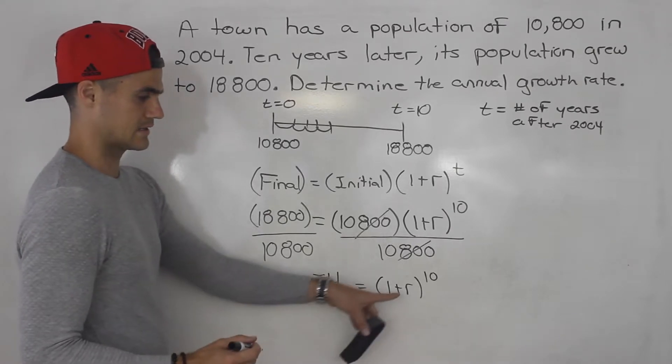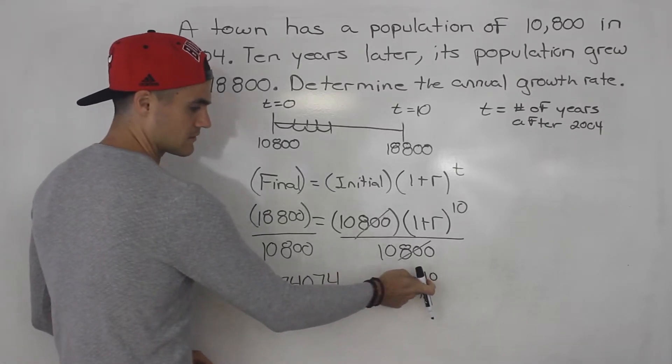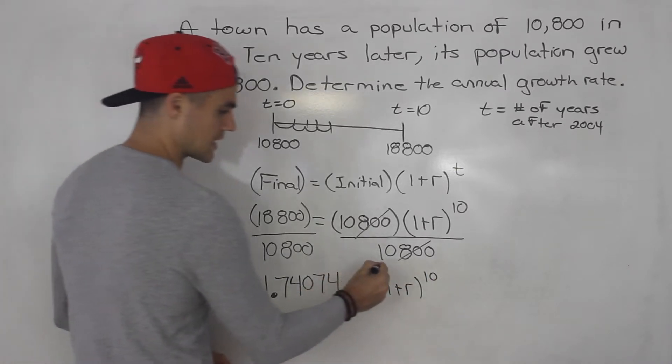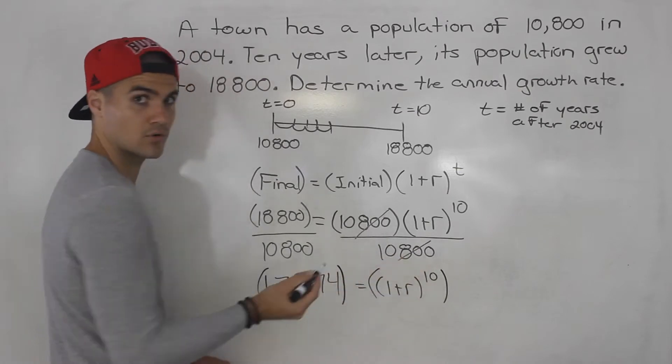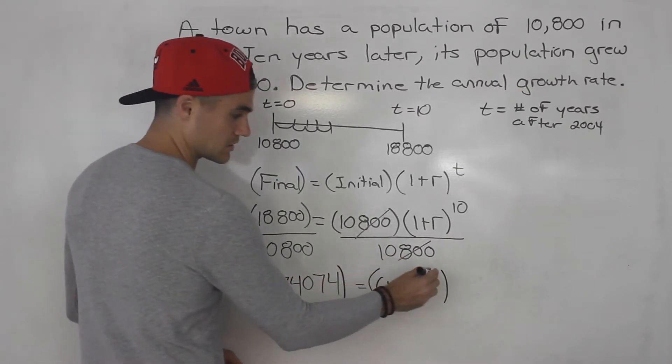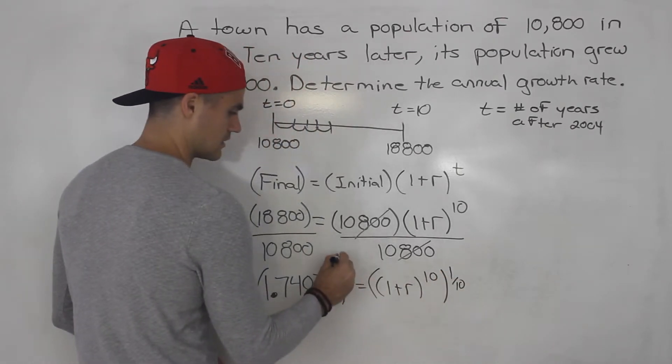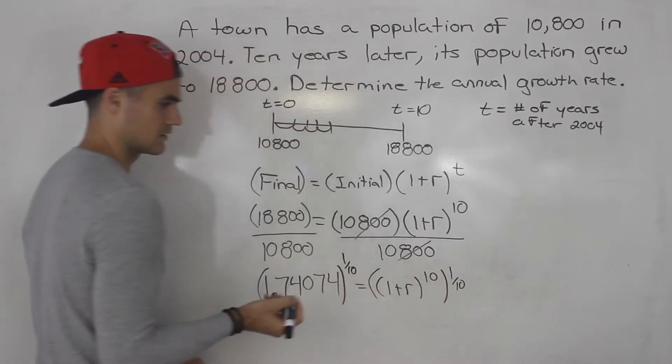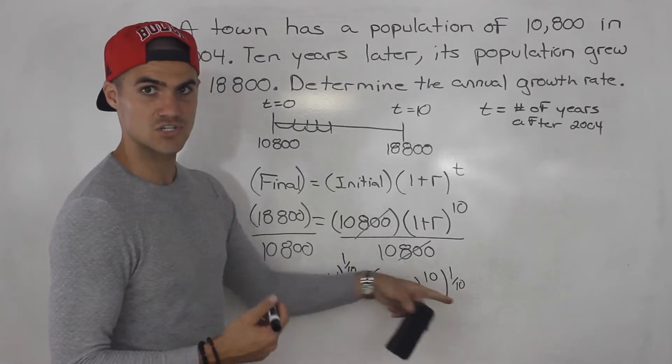And now how do we isolate for this r here? We got to get rid of this exponent 10. The way we do that is we take both sides to the power of the reciprocal of that exponent. So notice this is 10 over 1. The reciprocal of that is 1 over 10. So notice that 10 times 1 over 10 is just 1. So (1 plus r) to the power of 1 is just 1 plus r.